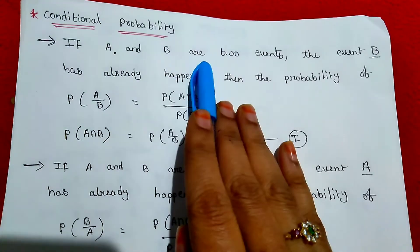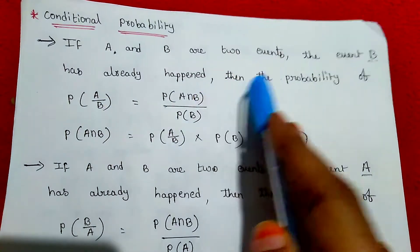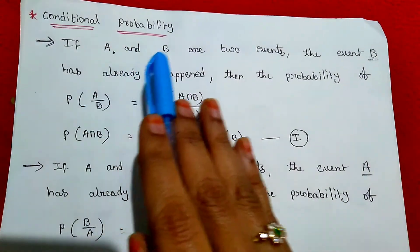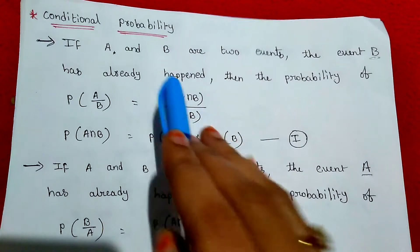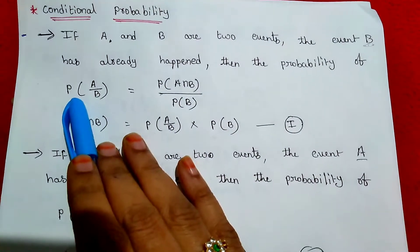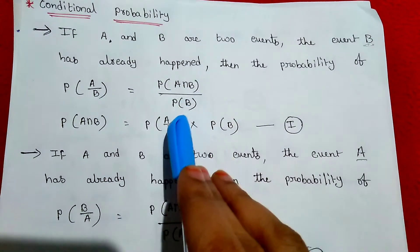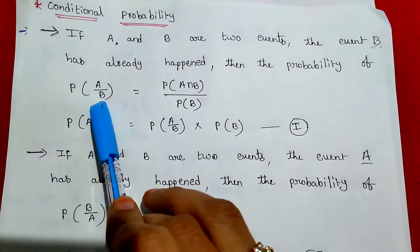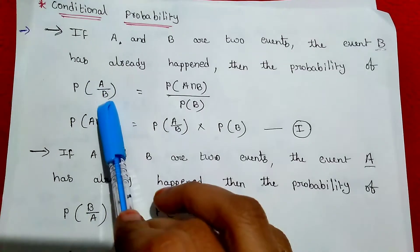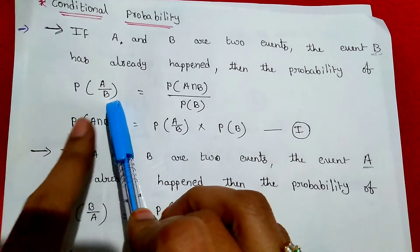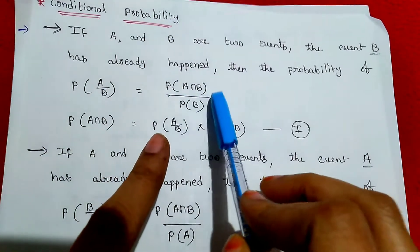If A and B are two events and event B has already happened, then the probability of A given B is equal to probability of A intersection B divided by probability of B. The already occurring event is the denominator. So probability of A given B equals probability of A intersection B divided by probability of B.